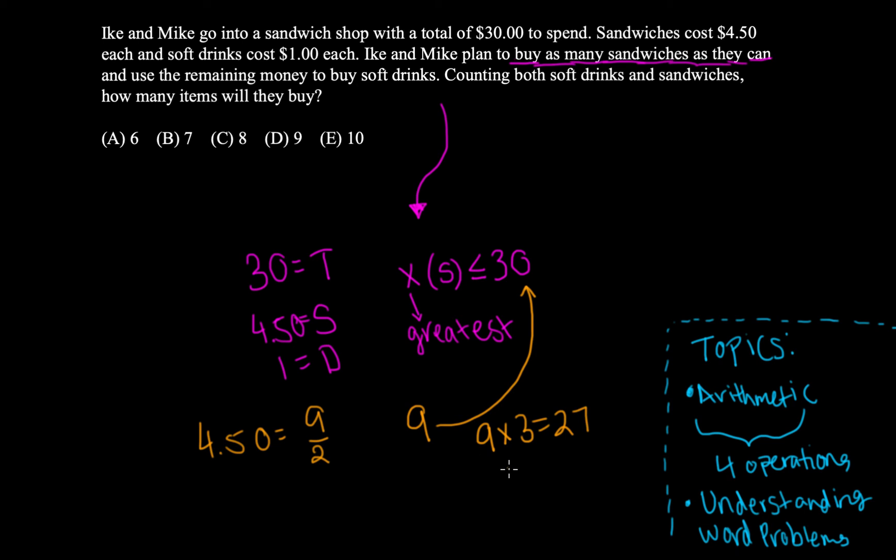And knowing this, what we can do is we can say, okay, you're dividing this value by 2. So in order to get the same product, you need to multiply your other value by 2.